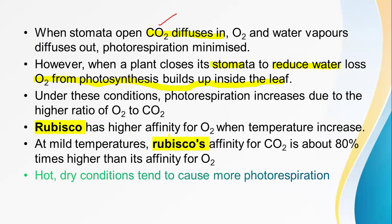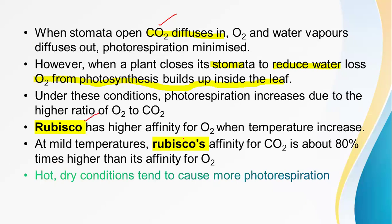Rubisco has a higher affinity for oxygen when the temperature increases. So Rubisco's bad habit is that as temperature increases, it increasingly binds oxygen instead of carbon dioxide. At mild temperatures, Rubisco's affinity for carbon dioxide is about 80% higher than its affinity for oxygen. This is a very ancient enzyme. When high temperature prevails, the affinity for carbon dioxide decreases relative to oxygen.